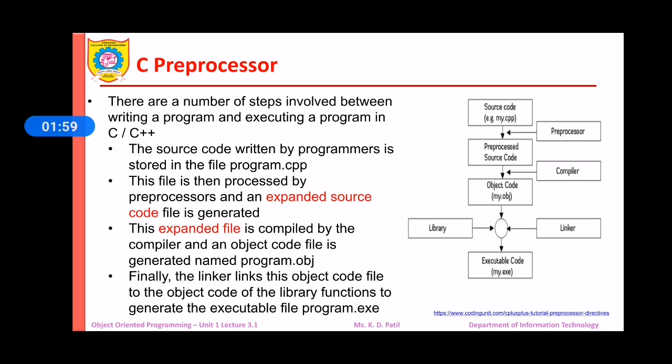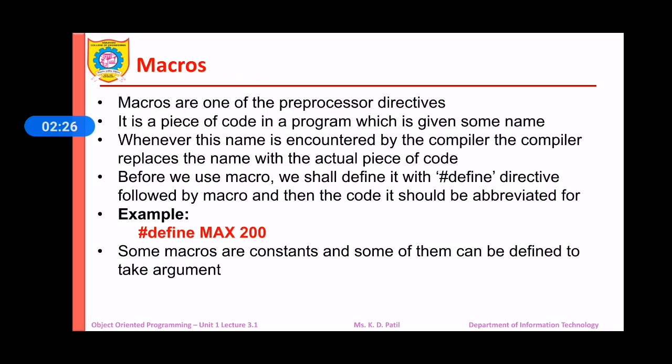If you observe, after writing the code and before compiling the code, the preprocessor works. That preprocessor takes some libraries which are required for our program execution and then generates an expanded source code. And then this expanded source code goes to the compiler and then we compile the program and the compiler will generate the machine code file that is .obj file.